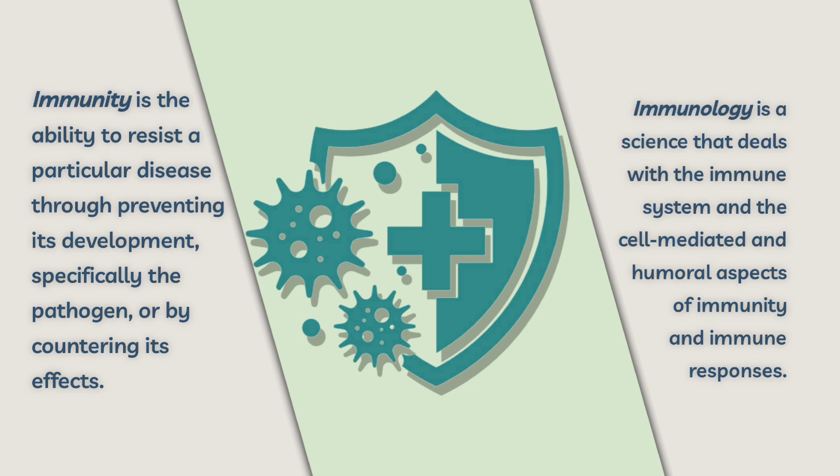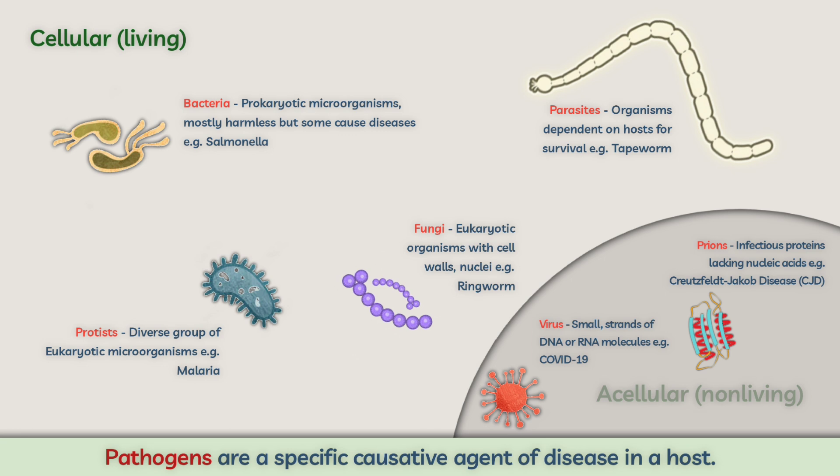Why do we need our immune system? Mainly because of pathogens — a specific causative agent of disease in a host. Some can be cellular while some are not. Cellular pathogens include: bacteria, which are prokaryotic microorganisms (example: Salmonella); fungi, eukaryotic organisms with cell walls and nuclei (example: ringworm); parasites, organisms dependent on a host for survival (example: tapeworm); and protists, a diverse group of eukaryotic microorganisms — a good example being malaria.